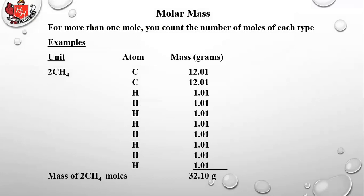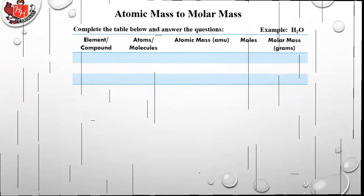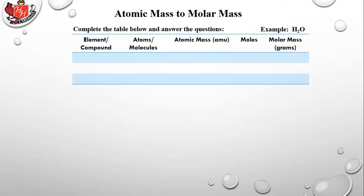Here's another example: two methane molecules. Methane is CH₄ — also known as natural gas. Two molecules of CH₄ means you have two carbon atoms and eight hydrogen atoms total (2 × 4 = 8). Add up each atom's atomic mass from the periodic table. CH₄ is a molecule — covalently bonded because carbon and hydrogen are both non-metals. Those atomic mass numbers we now treat as molar mass values expressed in grams rather than amu.